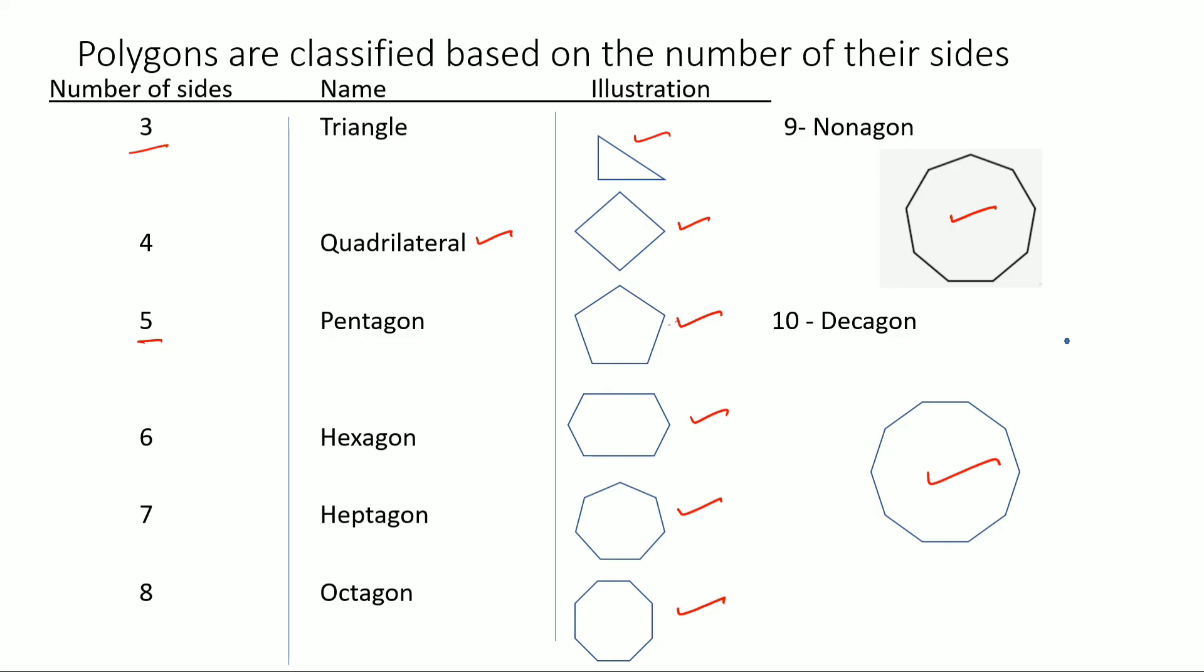I hope this is clear to you how to name the polygons based on the number of their sides. Thank you.